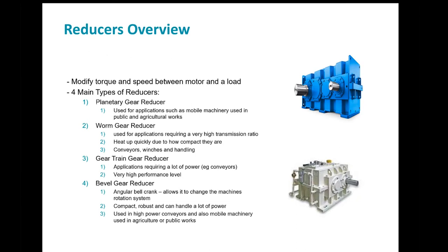What are the different types of gear reducers? There are four main types: planetary, worm gear, gear train, and bevel gear reducers. Each reducer has its advantages and disadvantages.